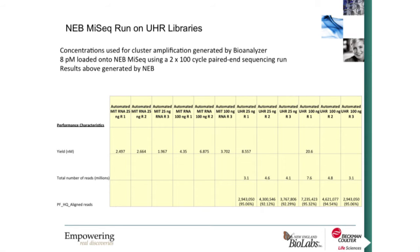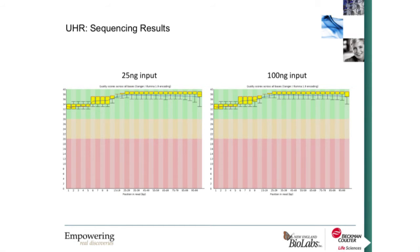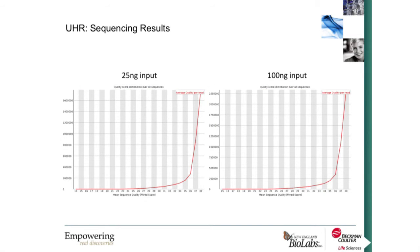NEB conducted a single MiSeq 2x100 cycle paired-end run, loading 8 picomolar onto the flow cell for the 8 libraries we generated in this automation run. We had very high pass-filter rates, north of 90%. FastQC data shows the average quality score along every base of the sequencing run for both 25 nanogram and 100 nanogram inputs, and we are above Q30 in both cases, confirming we are generating very high quality data.